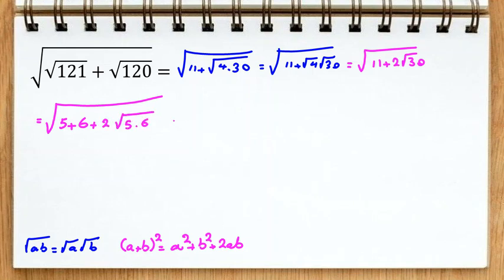Then we can say 5 is square root of 5 squared, 6 is square root of 6 squared, plus 2 times square root of 5 times square root of 6.